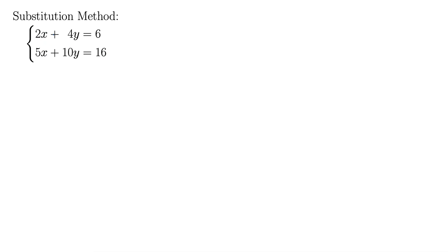And I'm looking right here at this 2x. If we divide both sides by 2, so I'm dividing every single term by 2, that gives us a new equation: x plus 2y equals 3. And we'll just leave this second equation alone down here: 5x plus 10y equals 16.